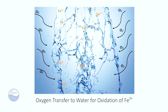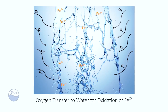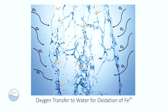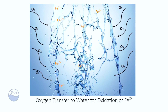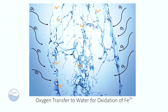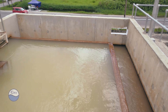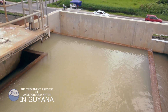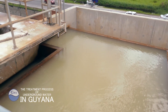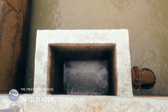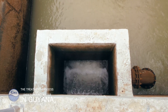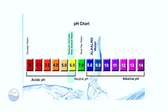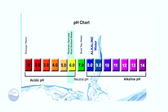The ratio is about 0.14 mg of oxygen to every 1 mg of ferrous iron. This is followed by the retention of the water for about 30 minutes in appropriately sized tanks, which allows for complete transformation of the iron species, and this process is pH dependent.